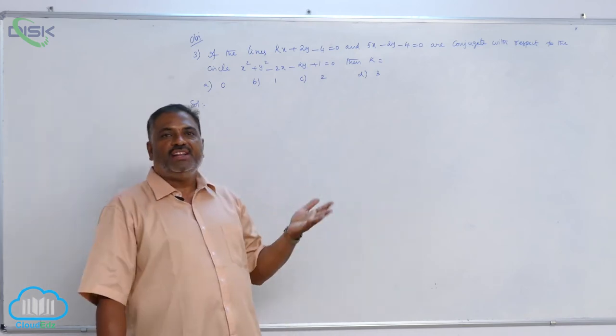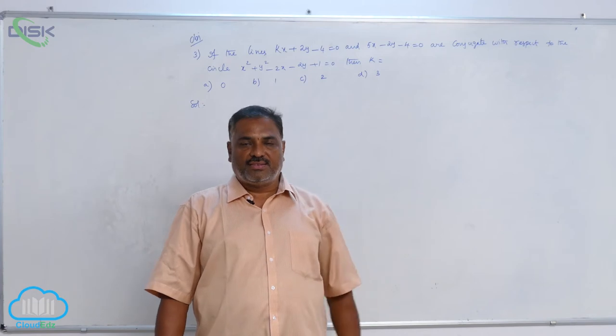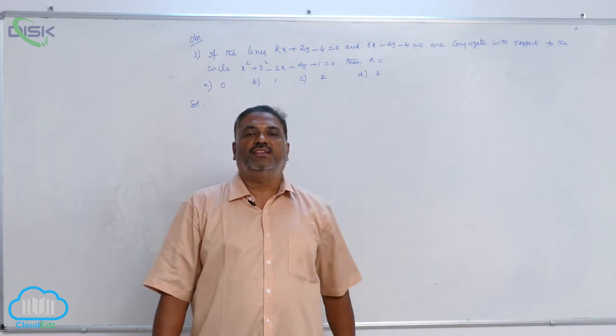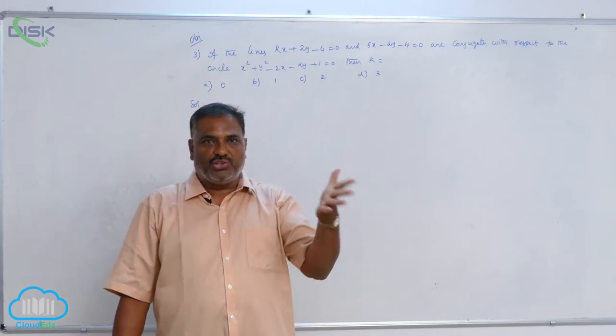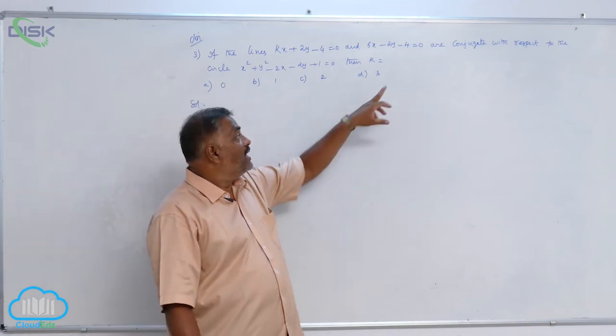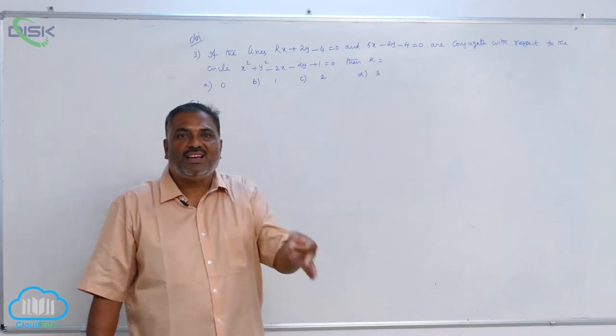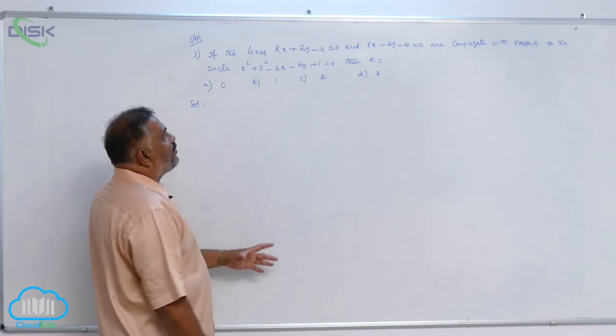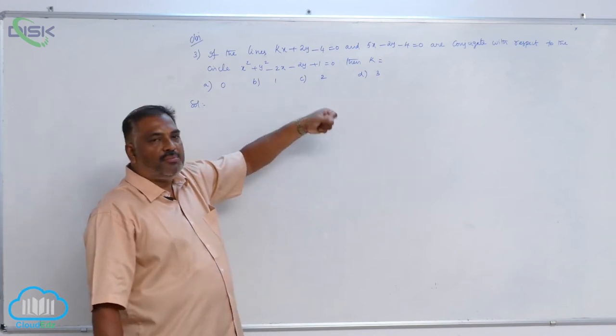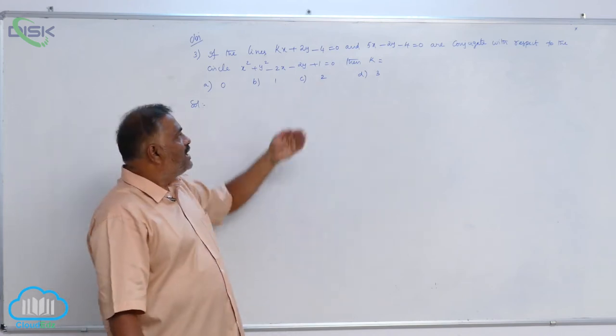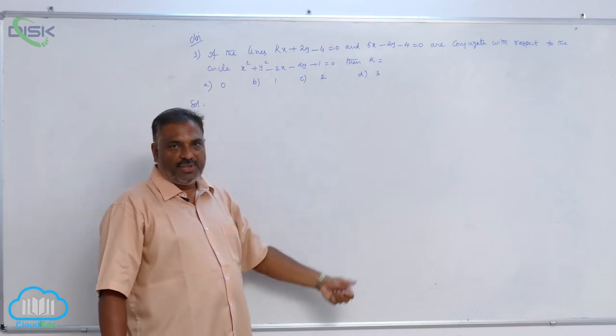We already discussed the definition of conjugate lines. Let us recall the definition once again. Two lines are said to be conjugate if the pole of either lies on the other. By doing that problem in board method, it is becoming a little bit lengthy.